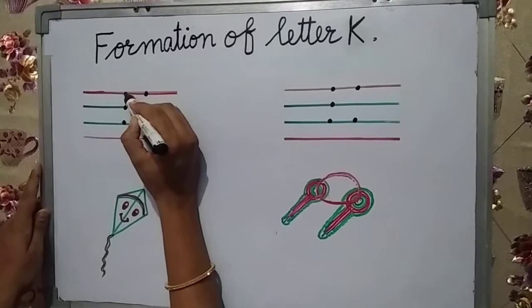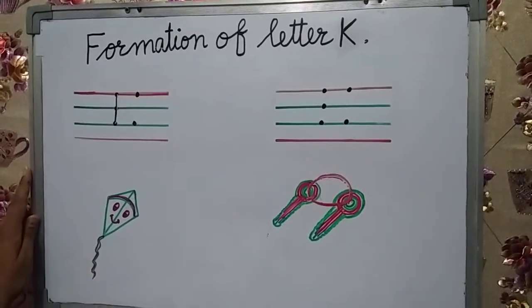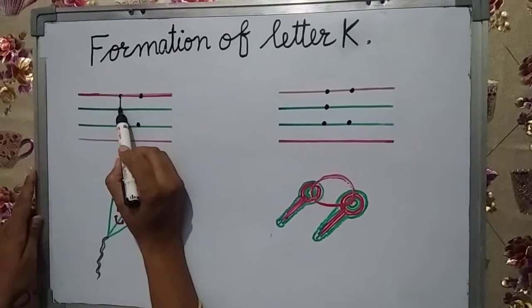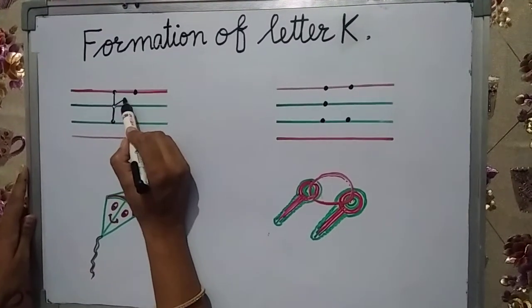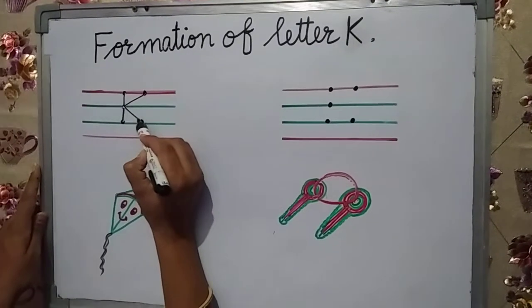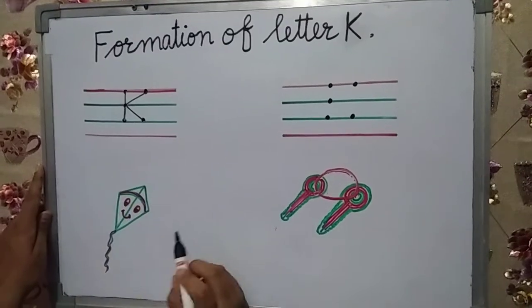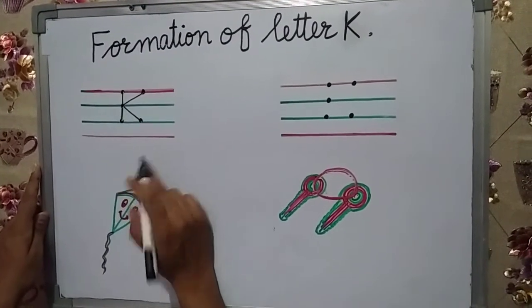Now, make a standing line. Make a standing line. Then, put one dot here and make a slanting line. Again, make a slanting line. This is the letter K.